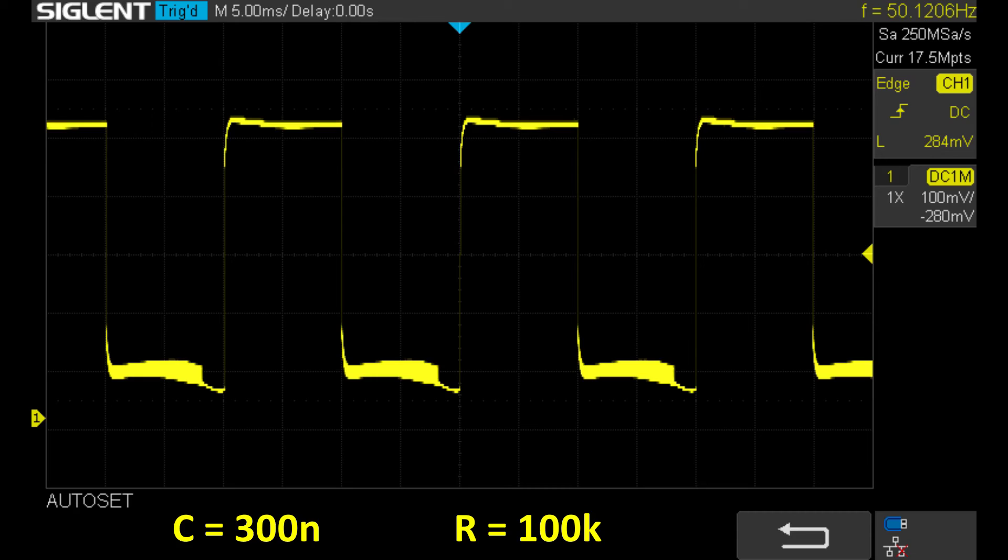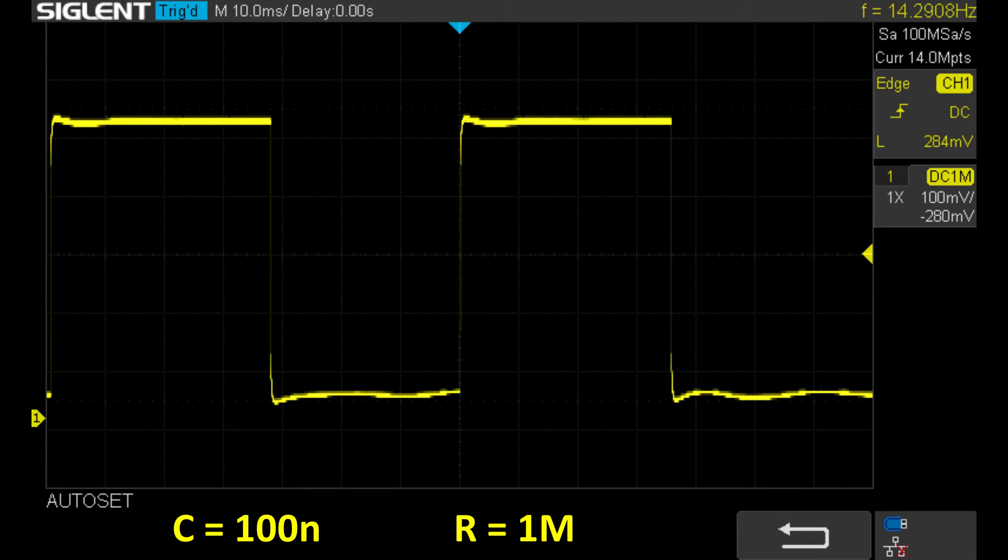And then if we go back to 100nF capacitor, but up the resistor from 100k to 1 meg, we get this square wave that looks a lot squarer, but if you look top right there, the frequency is actually just over 14 Hz, so you can get quite a low frequency with a reasonably shaped wave.